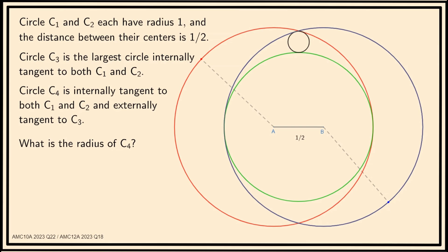Let's start by figuring out the radius of C3. C3's center is at the midpoint of AB. Let's label it O. We will denote the radius as the green line OC. Since OB is half of AB, its length is 1/4. It follows that the radius of the green circle C3 is 1 minus 1/4, which is 3/4.